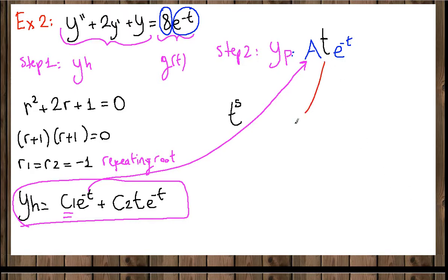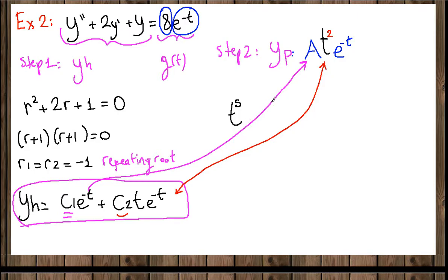But A·t·e^(-t) matches the second homogeneous term c2·t·e^(-t), so t to the first power doesn't work either. We move to t squared. It is best to start with lower powers of t to keep derivatives manageable, so we set y_p = A·t²·e^(-t).